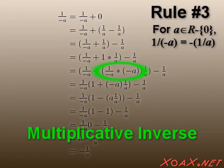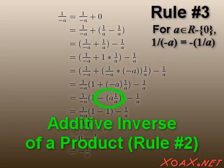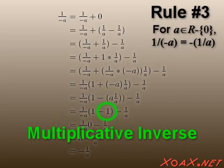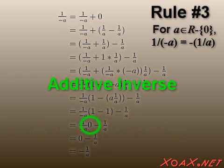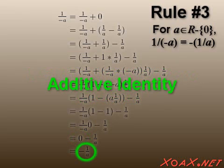For the next step, we use multiplicative inverses. Then we use distributivity. Next, we apply the additive inverse of a product. This reduces to one by multiplicative inverses. Then this sum is zero by additive inverses. Then this product is zero by the multiplication by zero property that we proved.